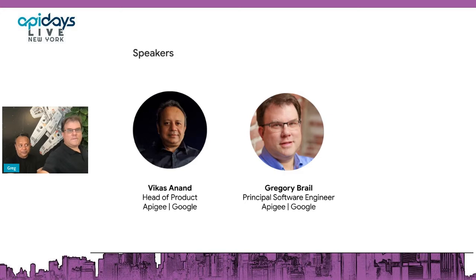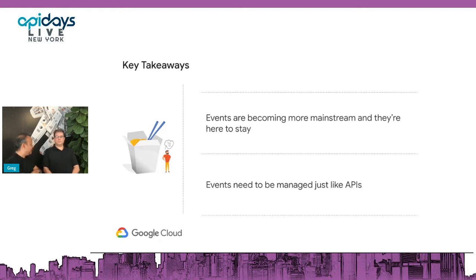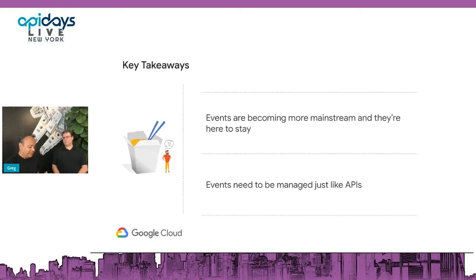Our topic is really about events today and how events are proliferating. If there are two takeaways from our session, one is that events are mainstream. Second is, because they've become mainstream and there's significant proliferation, they need to be managed. We come from an API management background and we know how to manage APIs — APIs are not just the tip of the spear to drive digital transformation.